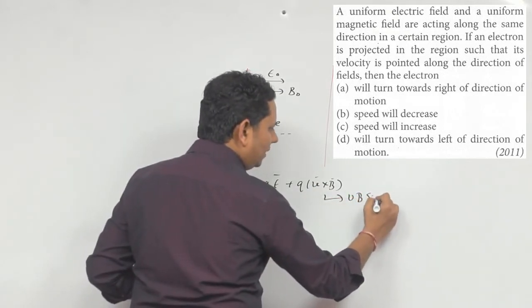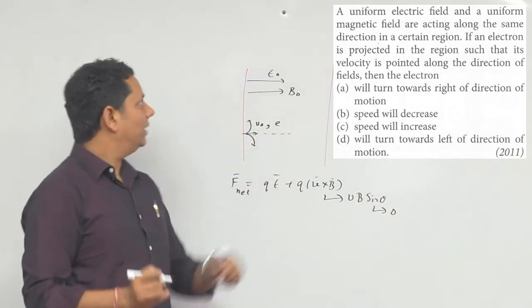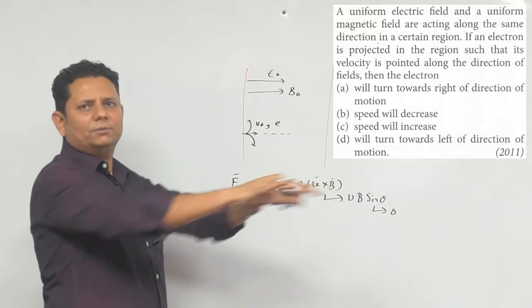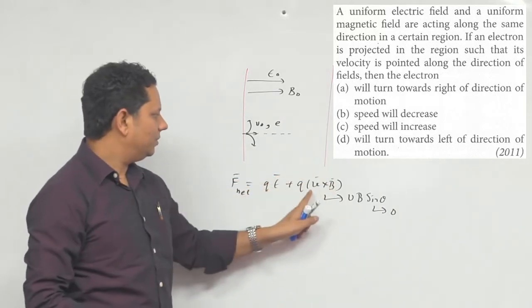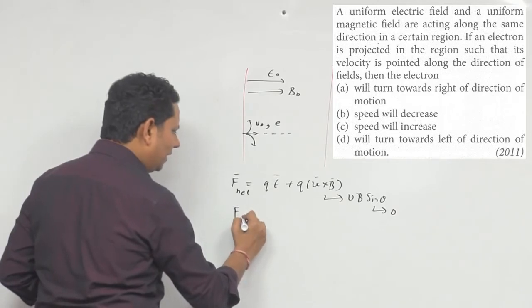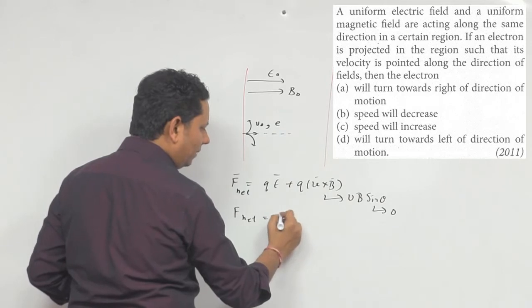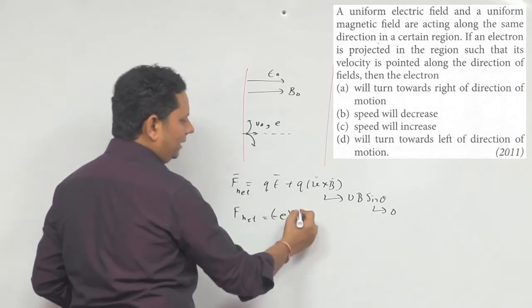This is the net force which is QE, because you have a charge of electron, so this is minus E multiplied by E.